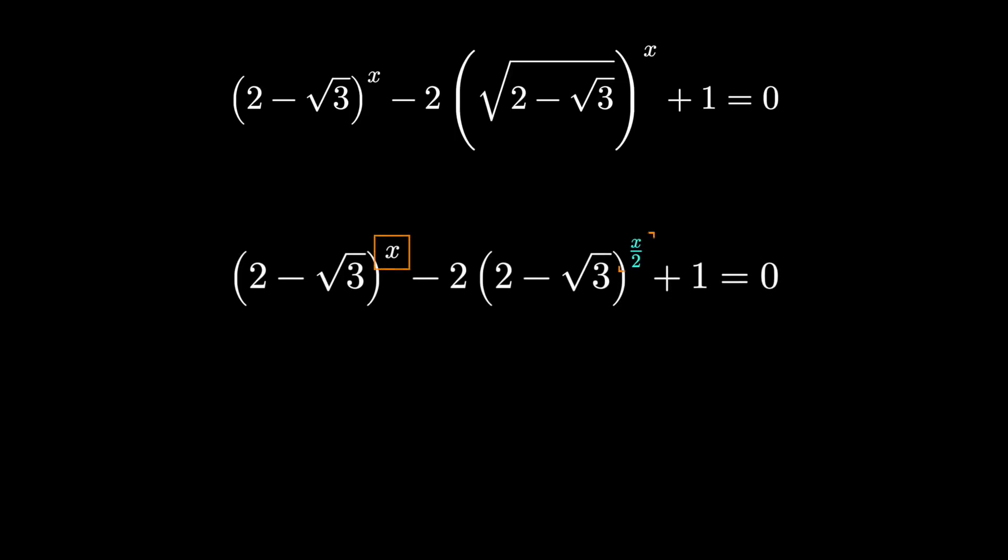We can see the first term is the square of the second term, that's the tip off. This would factor into 2 minus root 3 all to the x over 2 minus 1 times itself or we can just write that as quantity squared.